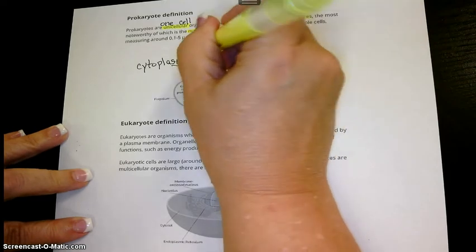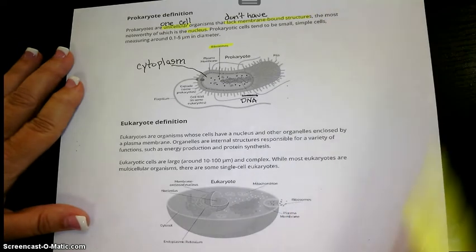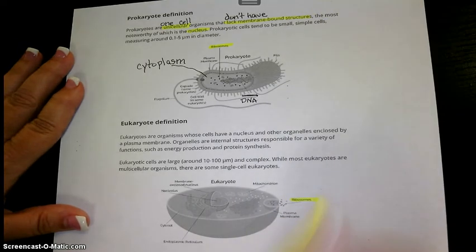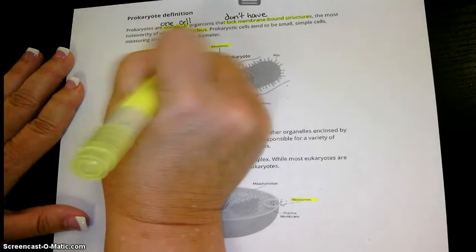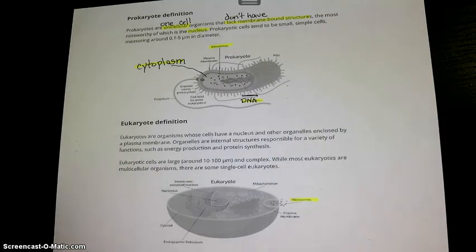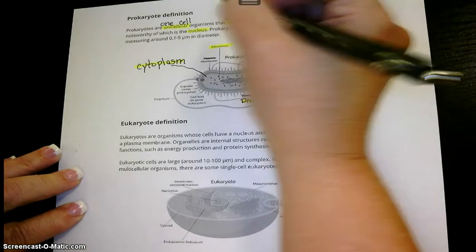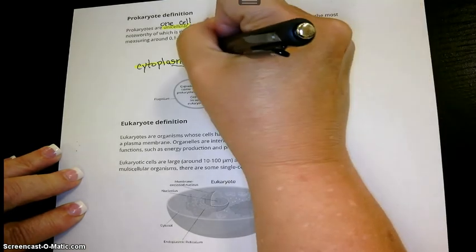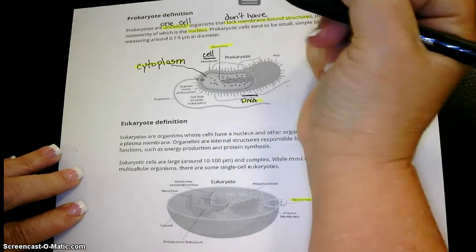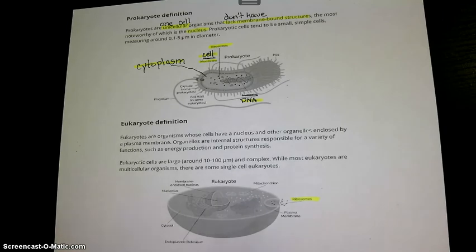And then we do have some organelles in a prokaryote. Ribosomes are a prokaryote organelle. And we also have ribosomes in eukaryotes. We have cytoplasm. We have DNA. We also have, on here, they call it a plasma membrane, which that's a good name. It's just not one that we use in middle school. We use cell membrane. It means the same thing. It's a membrane that holds all of the cell's stuff inside the cytoplasm and everything.